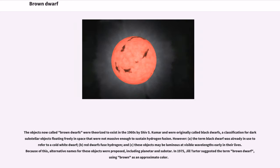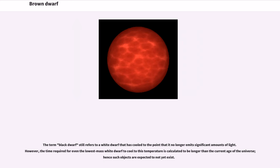The objects now called brown dwarfs were theorized to exist in the 1960s by Shiv Kumar and were originally called black dwarfs, a classification for dark substellar objects floating freely in space that were not massive enough to sustain hydrogen fusion. However, the term black dwarf was already in use. In 1975, Jill Tarter suggested the term brown dwarf, using brown as an approximate color.